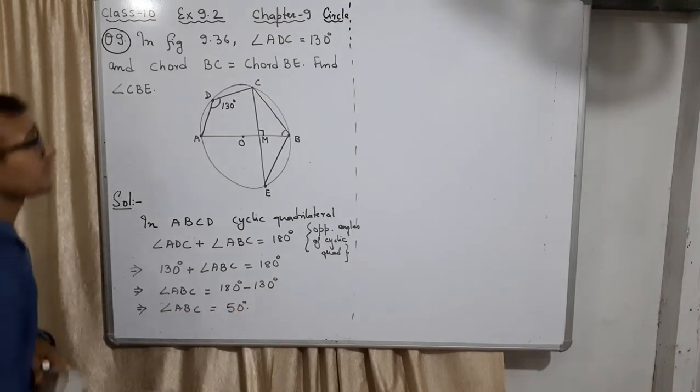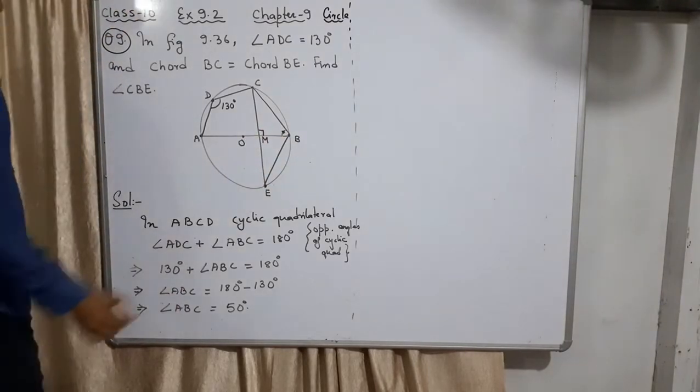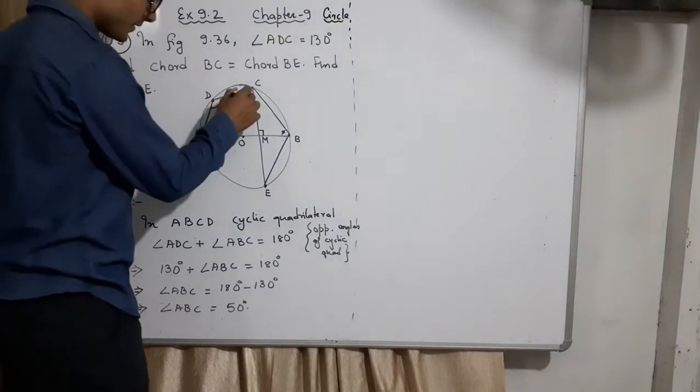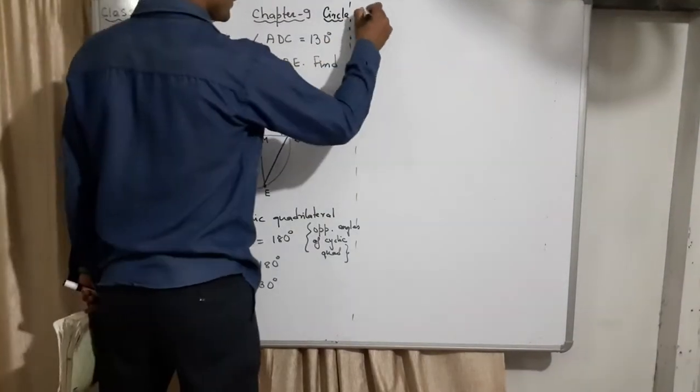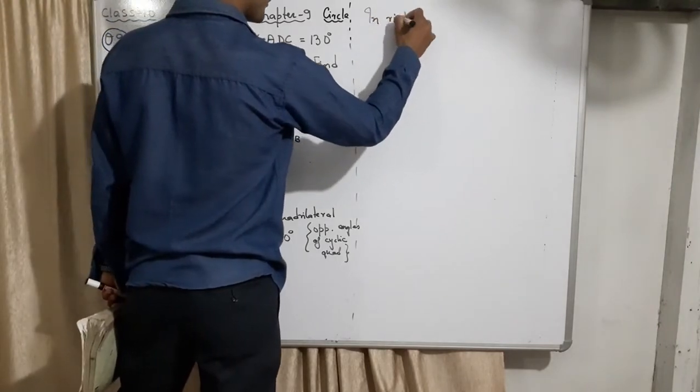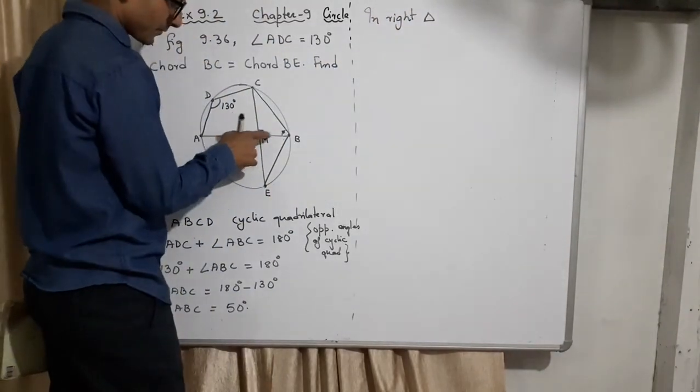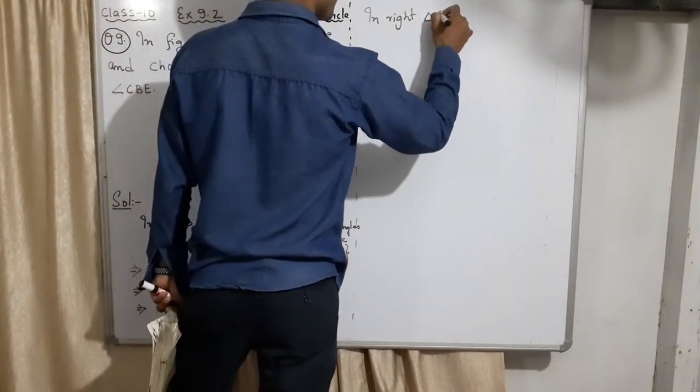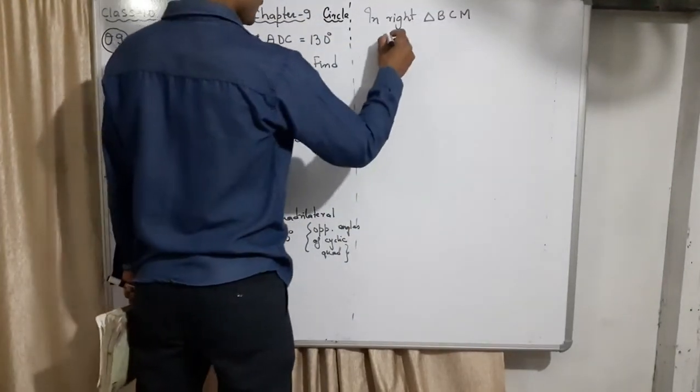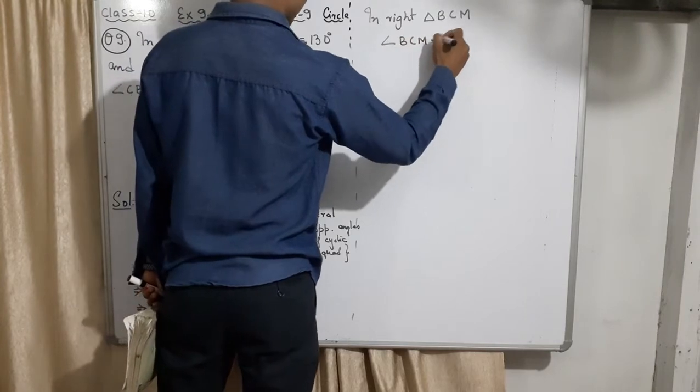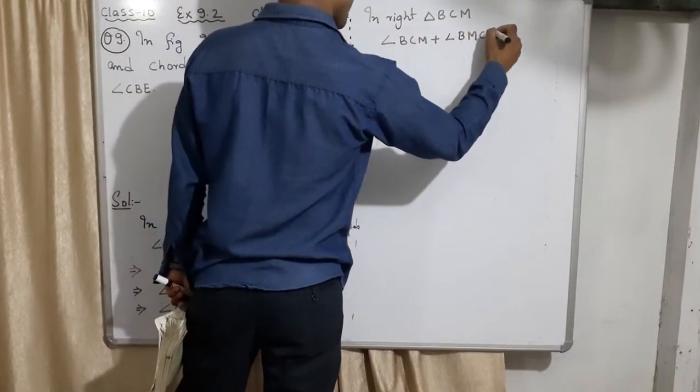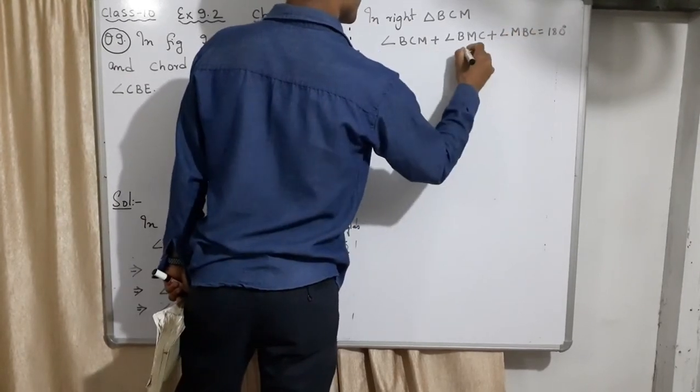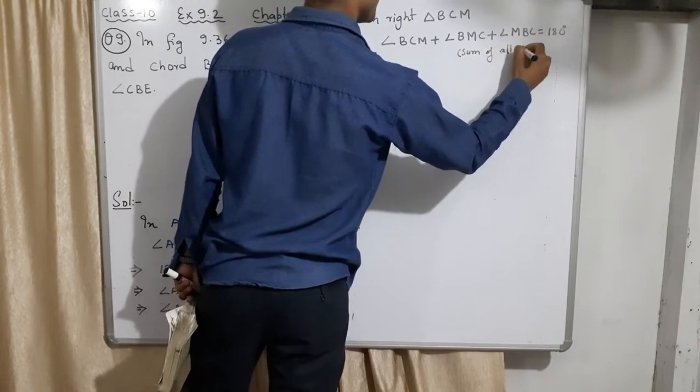So this is now found, 50 degrees. I need this side also, this angle also. So I'll go to there. And in this triangle, I'll try to find what is this. In right triangle, remember this is a right triangle, why? Because it's 90 degrees. CBM or C and B also, right CBCM.